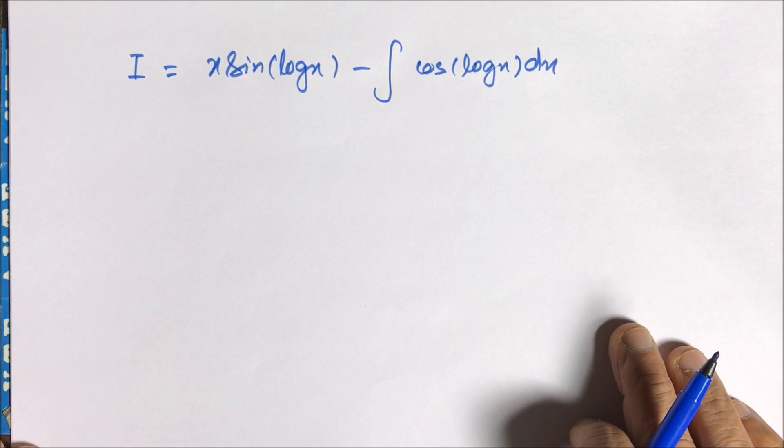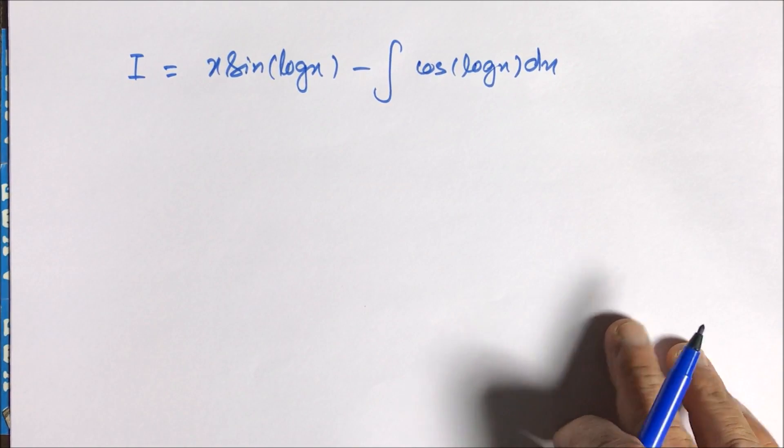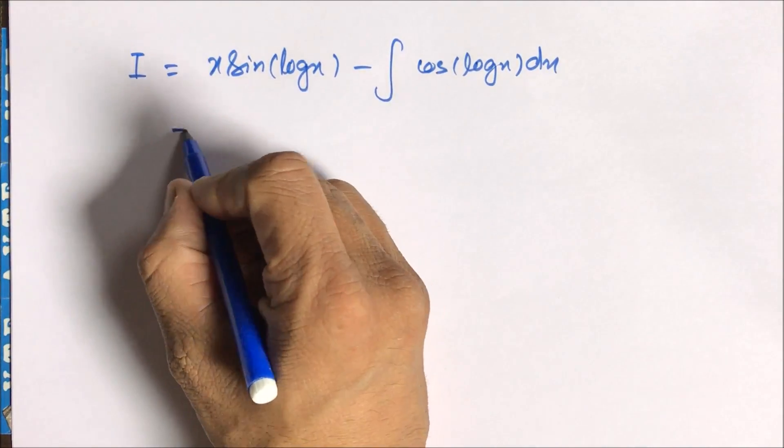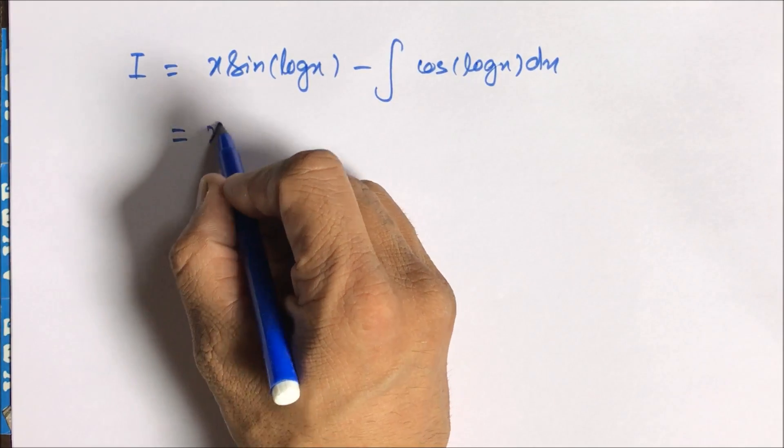Now the rule of by parts is: if we have taken sin(log x) or cos(log x) as first function, we cannot change that to second function, otherwise it will be a reverse process and you will come back to original question, and that will be a little funny. So we apply by parts on cos(log x) using the same logic.